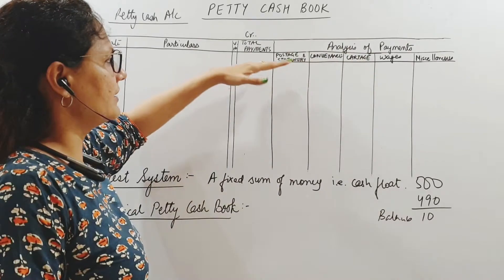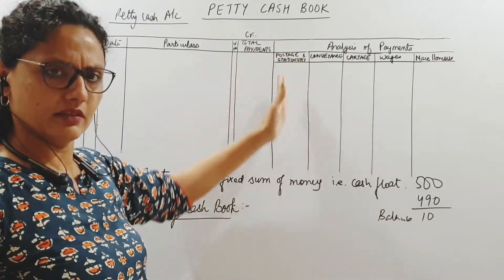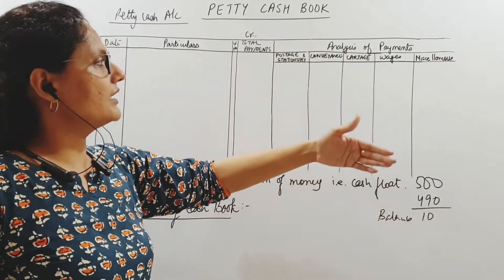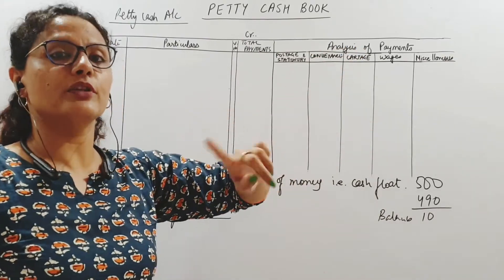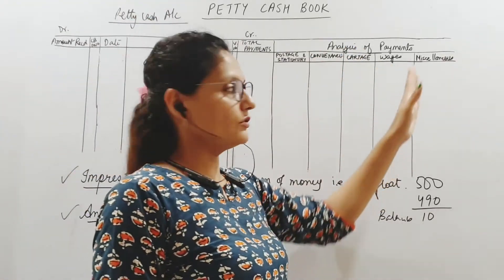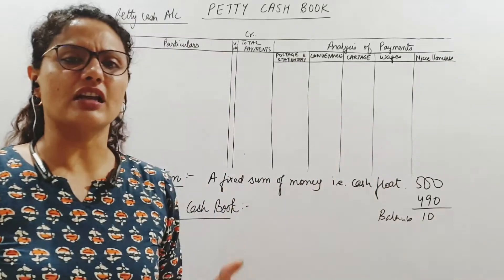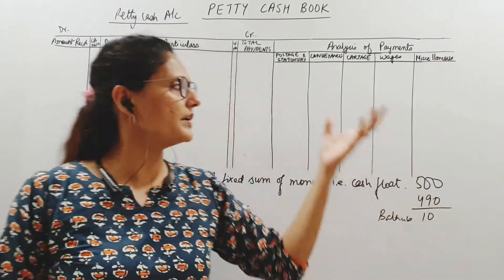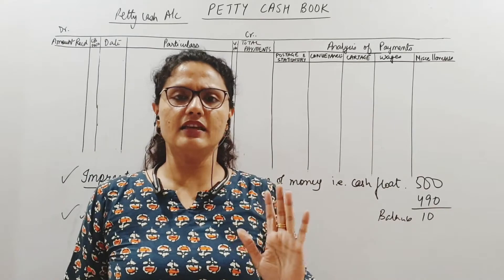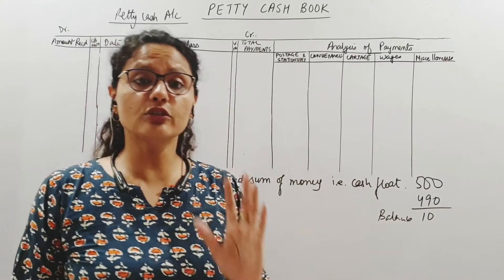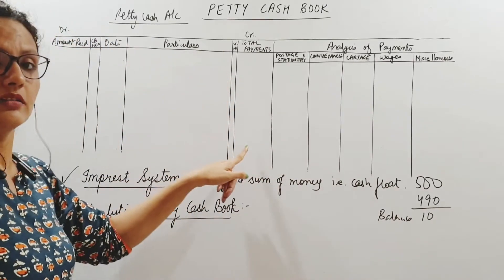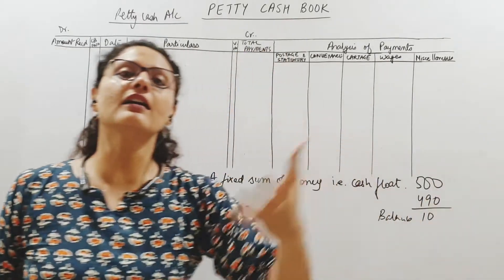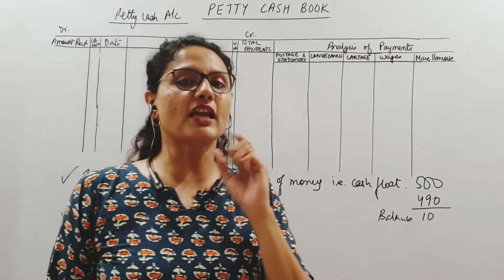Usually the accounts you will find here are postage and stationery, conveyance meaning travelling of people, cartage meaning transportation of goods, wages paid to labourers, and miscellaneous charges for small irregular expenses. So we not only record the small payment but also analyse where it goes, so that we have a proper check and control.